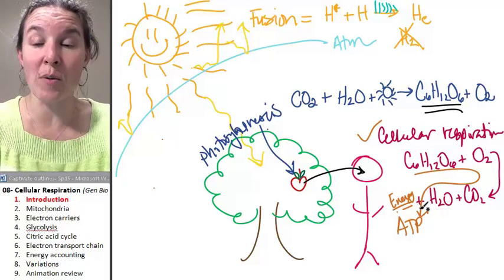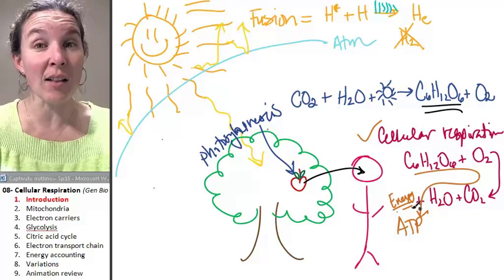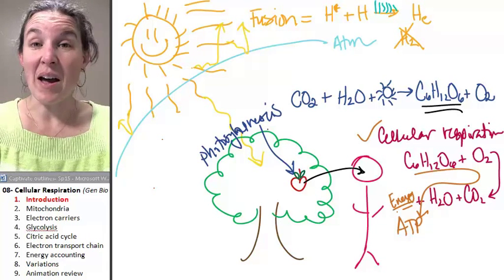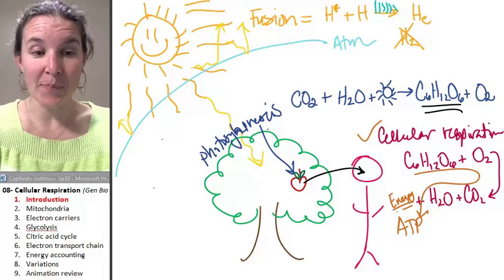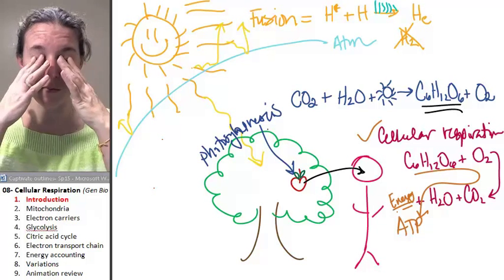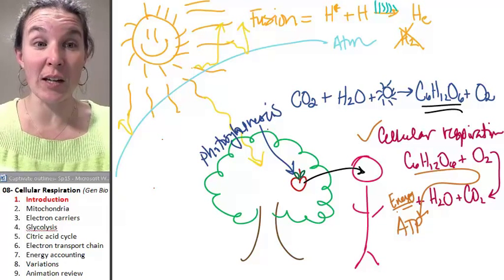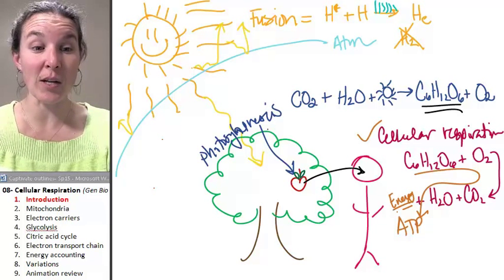And hopefully you already know that from our previous lectures on the cell, it's the mitochondria. So let's take a look at the mitochondria and label the parts that are going to be significant to understanding the process of cellular respiration.